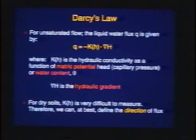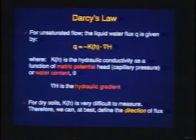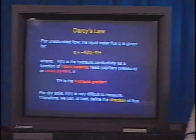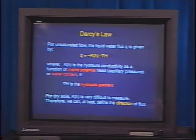The problem is, in the unsaturated zone, measuring this hydraulic conductivity — which is a function of water content or pressure — is extremely difficult, particularly when we get to really dry soils at 5–10% water content. The unsaturated zone is also real heterogeneous. So how do we pick a representative value of hydraulic conductivity? We can't really measure conductivity very well yet. What we can measure quite well is the gradient in potential — the potential energy gradient in the fluid phase.